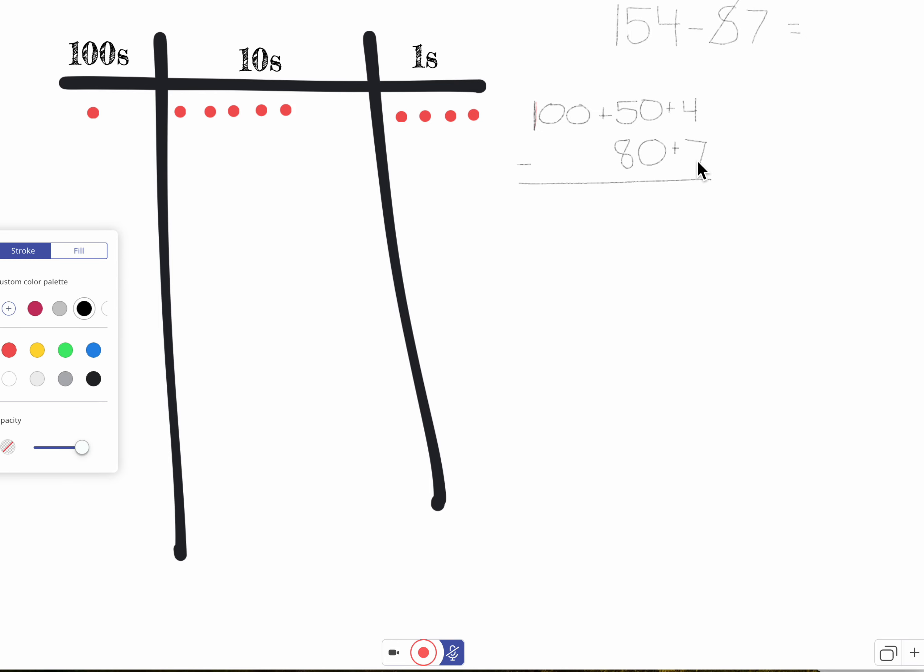154 minus 87. Okay, can we separate seven from four? Let's see: one, two, three, four. No, we cannot, so we're going to have to do an exchange. I can exchange 1 ten for 10 ones. So again, I'm not subtracting this, I'm just renaming it.